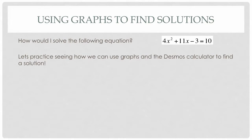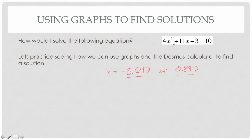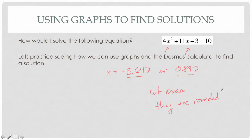The solutions are x equals approximately negative 3.642 and x equals approximately 0.892 — both values make the equation equal to 10. These are not exact answers since they're rounded, but at least it helps us check our algebra. When we do the algebra to get the exact solution, we can come in and graph it to make sure our algebraic answer matches what we get graphically.